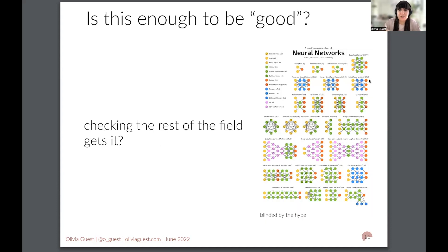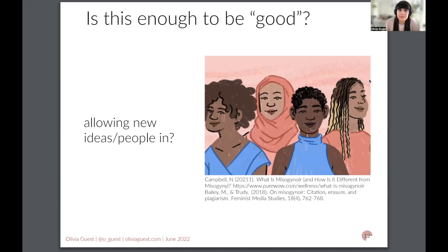What about checking that the rest of the field understands what we're on about? Sometimes you could just blind people by obfuscating important points using very fancy models. That doesn't seem good. And what about allowing new ideas or people in? If you don't do that, that doesn't seem good to me, but it does seem to be the case that it happens. So we should probably act to change that and indeed allow new ideas and people in. We shouldn't have theories that are hostile to diversity and giving credit where credit is due and stopping plagiarism.